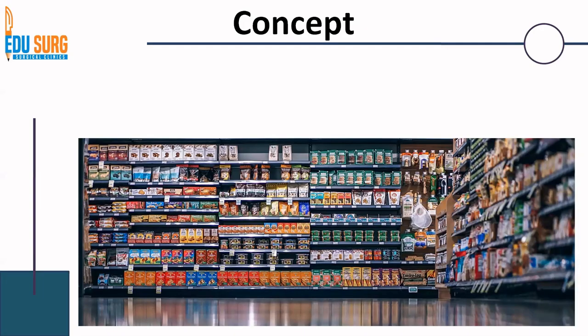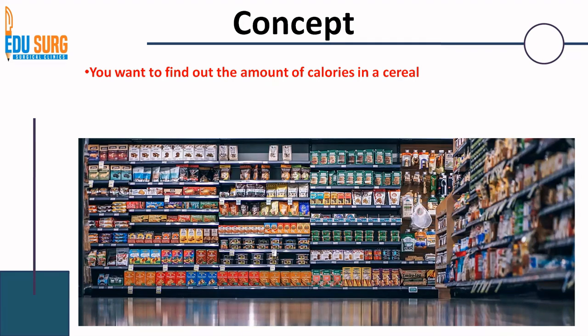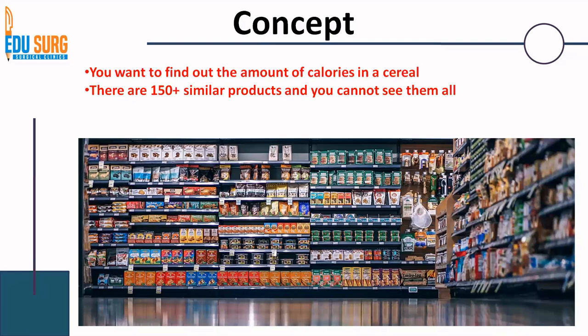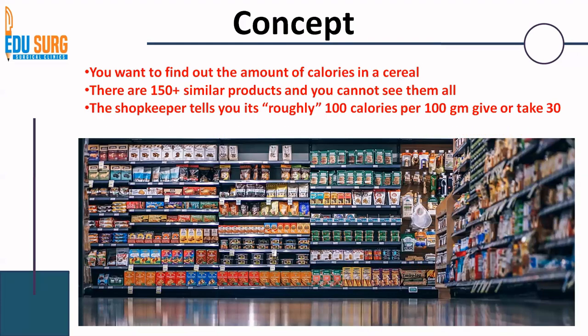Let us take an example as always. Suppose you have gone to a grocery store and you want to find out the amount of calories in a random packet of cereal. Now there are 150 plus similar products — so many brands and so many products. You can't check all 150, but the shopkeeper tells you there are roughly 100 calories per 100 gram of cereal, give or take 30.